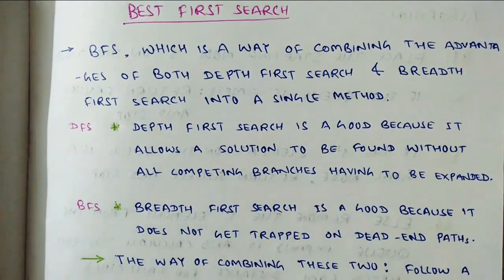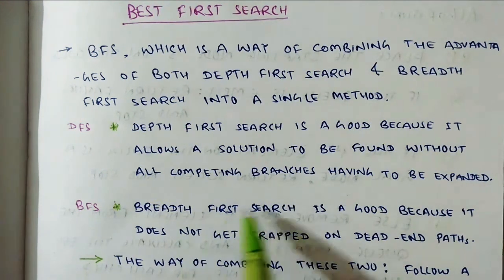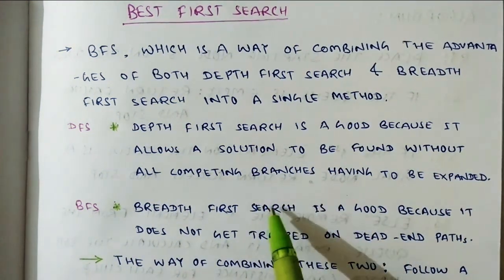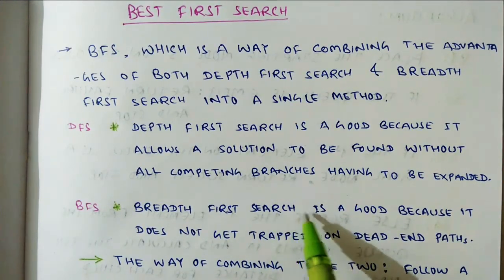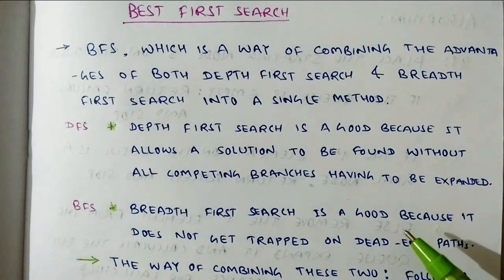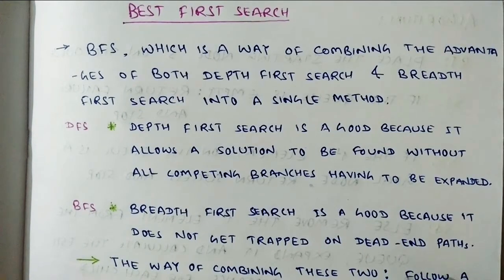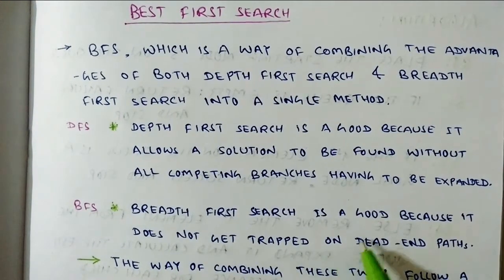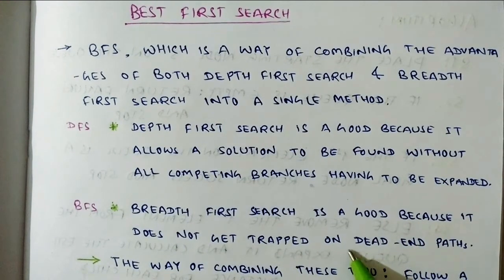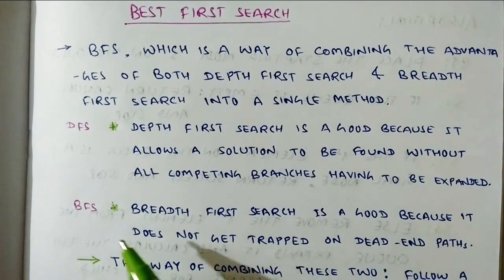If we talk about BFS — Breadth First Search — it will start from the start node and visit whatever children are there. In this way, if we reach the goal node or target node at an upper level, then the rest of the levels will not be required. If we go to goal nodes and target nodes, then it will stop. So this is the advantage of BFS.